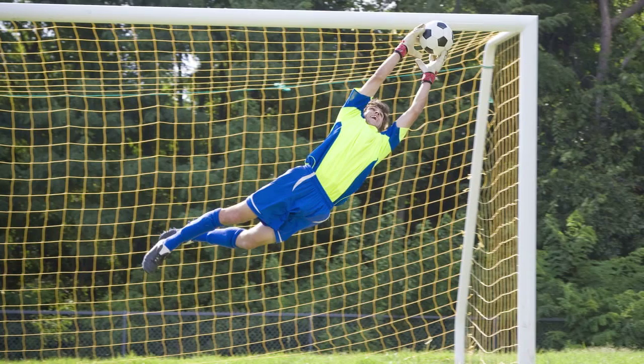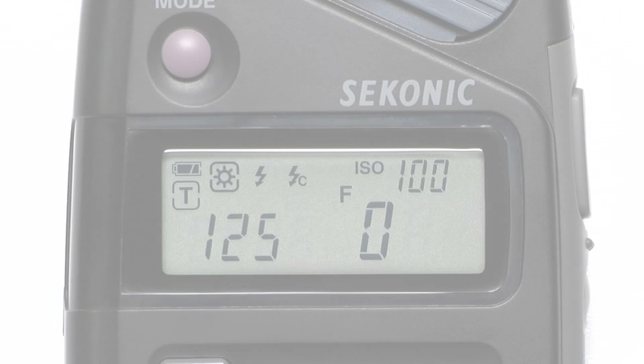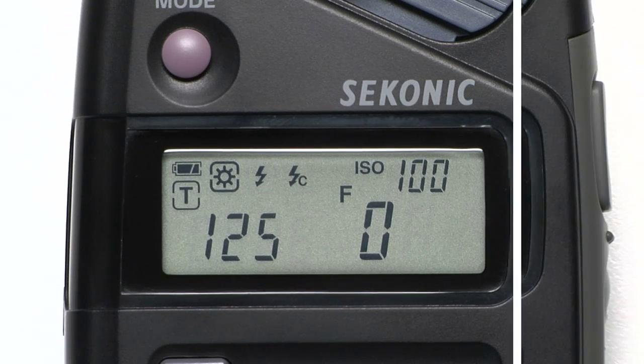In order to freeze action or create motion blur, photographers often use shutter priority mode. Let's do an example shutter priority reading. Make sure that both the sun icon and the T are both selected. You are now in shutter priority mode.